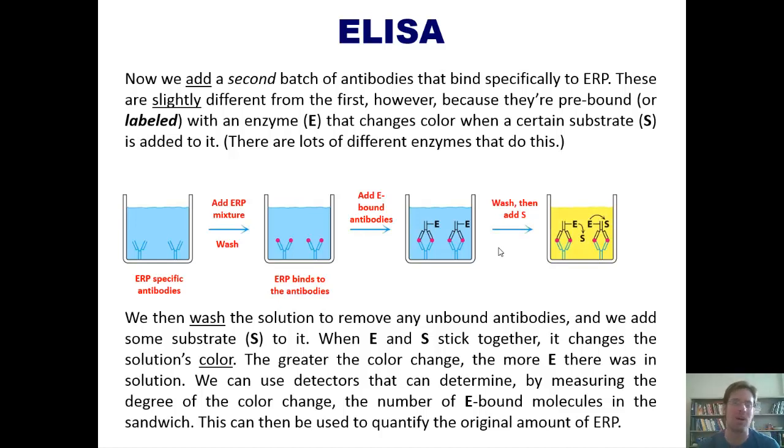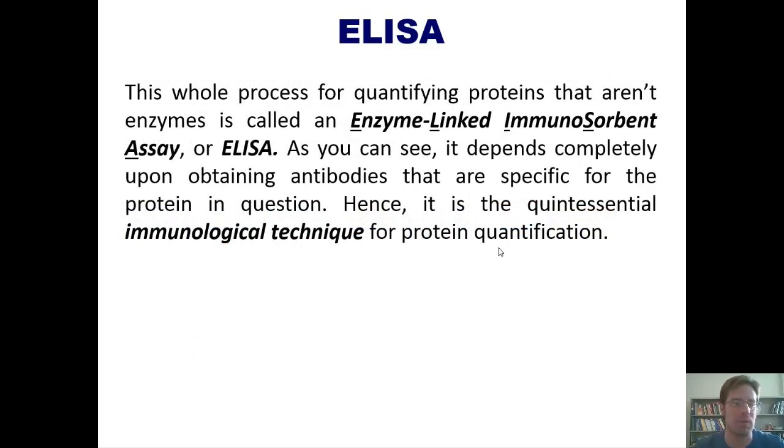We can then use detectors that have the ability to determine, by measuring the degree or extent of that color change, the exact number of enzyme-bound molecules that were in the original sandwich. This can in turn be used to quantify or numerically measure the original amount of ERP. Now, this whole process for quantifying proteins that aren't enzymes is called an enzyme-linked immunosorbent assay, or ELISA. Now, as you can see, ELISAs depend completely upon obtaining antibodies that are specific for the protein in question. Hence, it is the quintessential immunological technique for protein quantification.